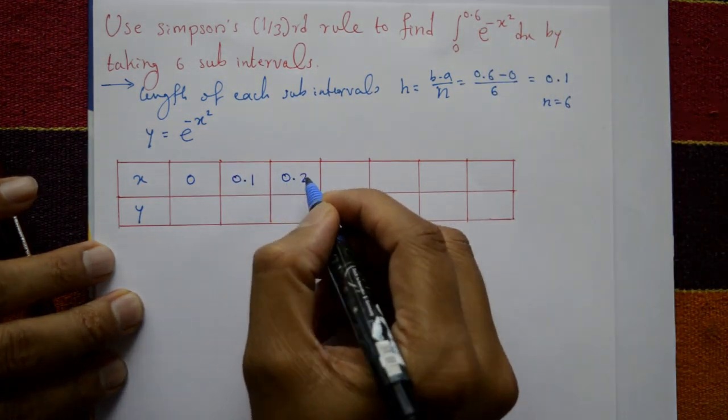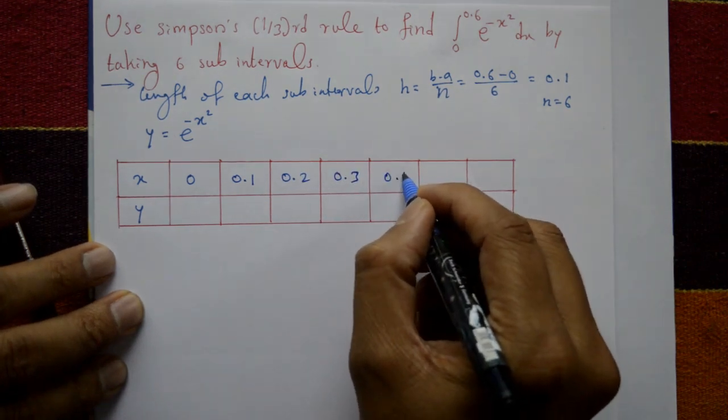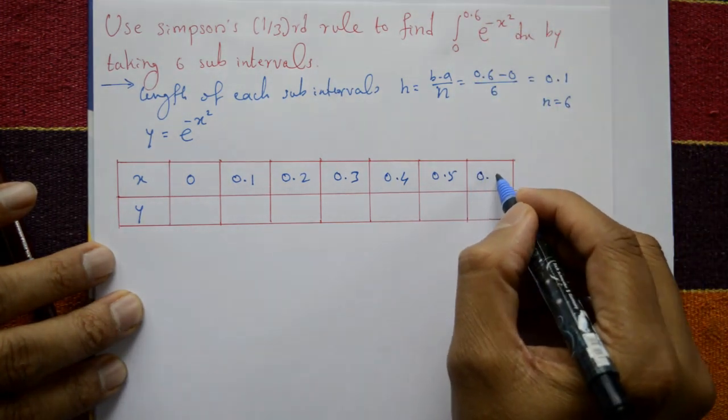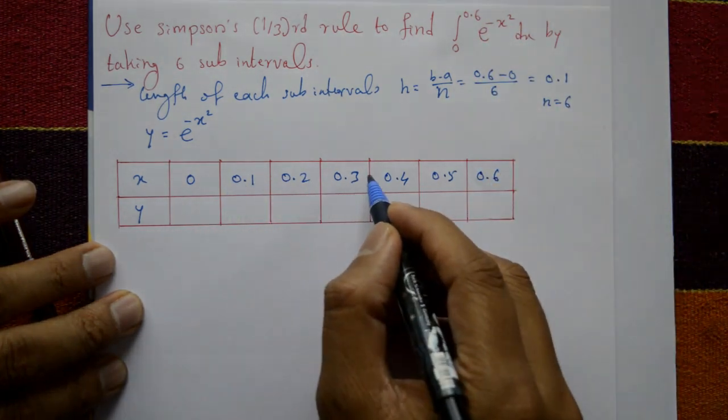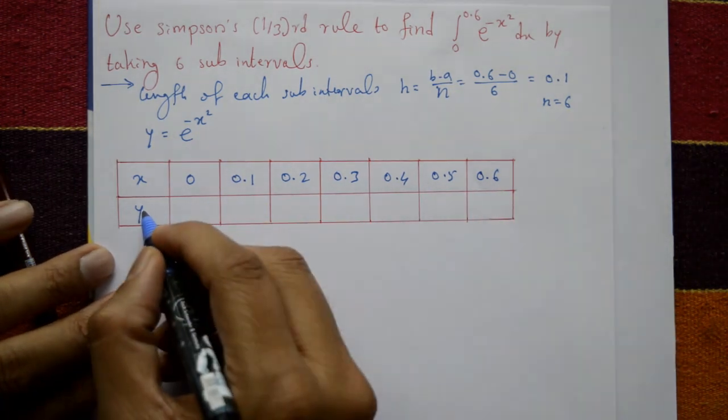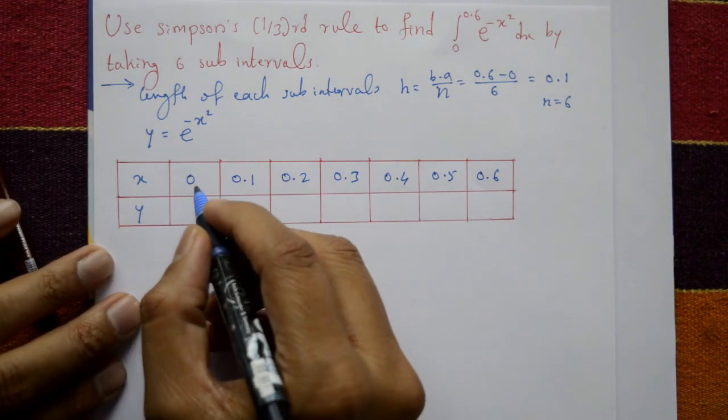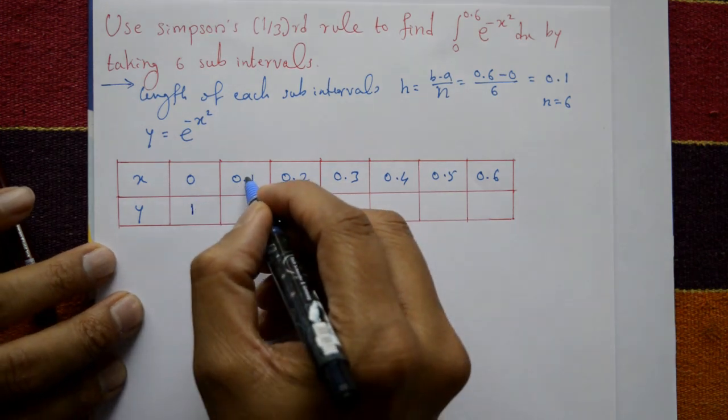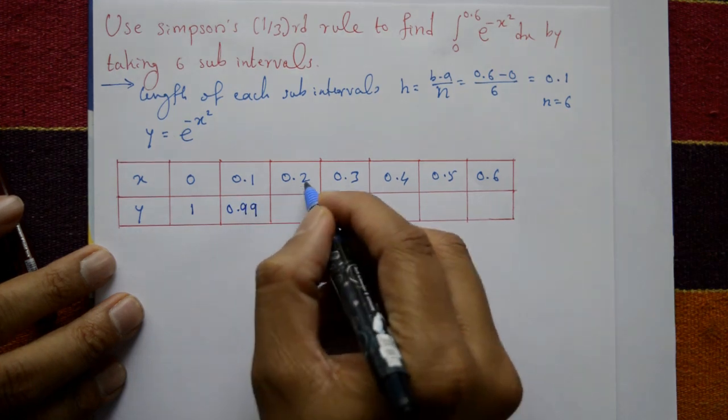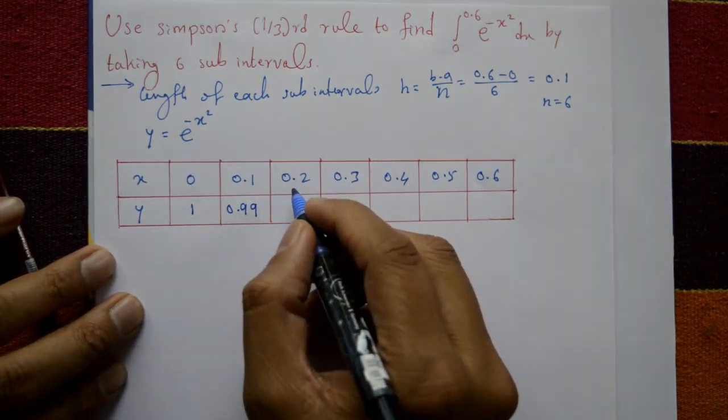The points are: 0, 0.1, 0.2, 0.3, 0.4, 0.5, and last one is 0.6. That's seven ordinates, six equal parts. Put x = 0: e^0 is 1. x = 0.1 gives 0.99. x = 0.2 gives 0.9608.